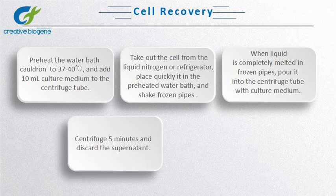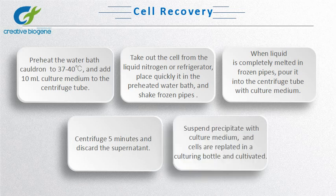Centrifuge for 5 minutes and discard the supernatant. Suspend the precipitate with culture medium, and cells are replated in a culture bottle and cultivated by the conventional method.